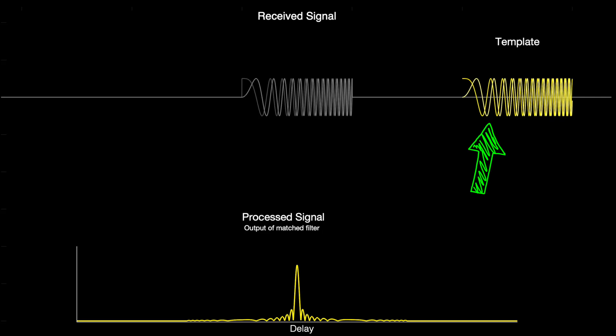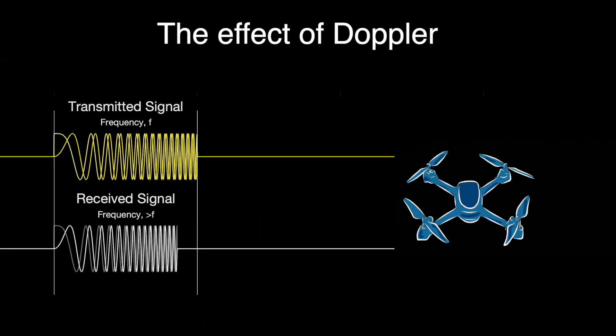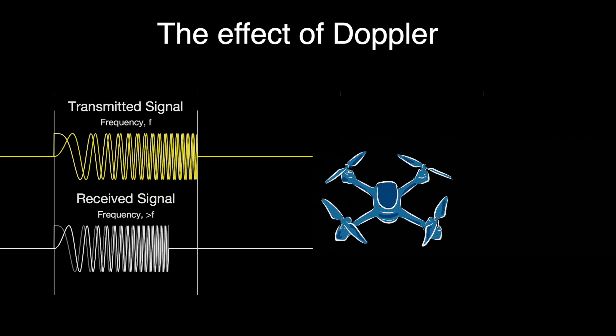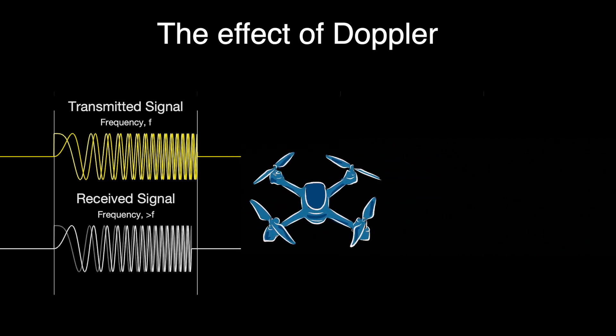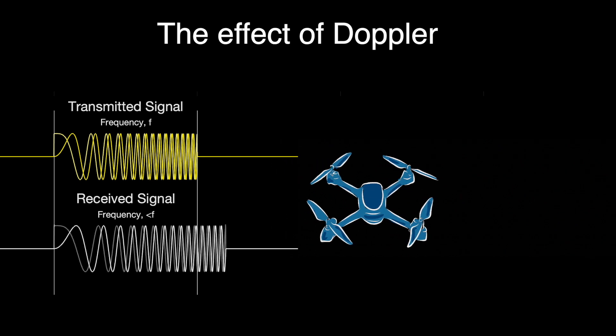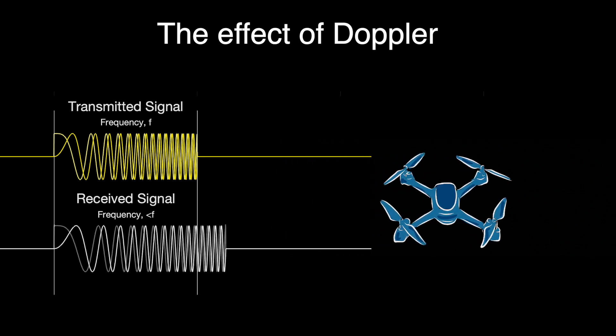We know that if the template in our matched filter matches the pulse perfectly, we get this compressed pulse in the process signal. However, this isn't always the case because of Doppler. If the object is moving towards the radar, then the returned pulse is shorter and the frequency is higher. And if the object is moving away, then the returned pulse is longer and the frequency is lower. So why is this a problem?